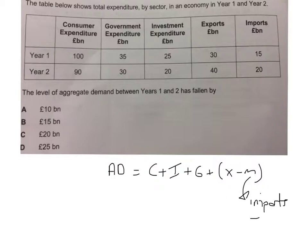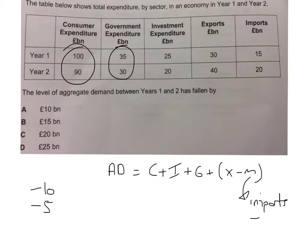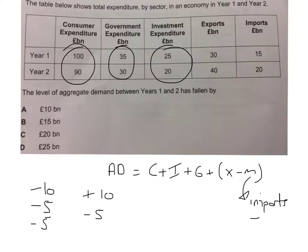Let's go through each one. First of all, consumer expenditure has gone down by 10 million, so already we've got minus 10. Then government expenditure has gone down by 5, so we've got another minus 5. Then investment expenditure has gone down by 5 as well, so we're at minus 20. Exports have gone up by 10, so we've got a plus 10. Plus imports have gone up by 5 — now imports going up is actually bad for our economy, so you count it as minus 5. Lots of people will just count that as a plus 5 and they'll be wrong.